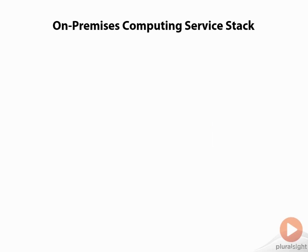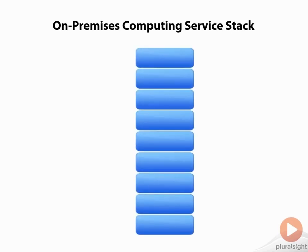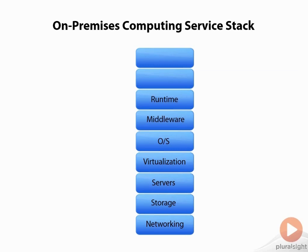In a typical on-premises computing service stack, a traditional on-premises environment has a networking layer, a storage layer, a server layer — the physical server layer — above that a hypervisor or virtualization layer, then a guest operating system, middleware environments including message queuing and other services, a runtime environment such as Java, PHP, or Cloud Foundry, then a data layer, and finally the application layer where the application code runs.